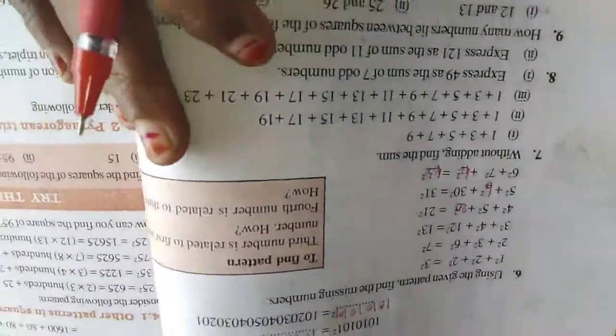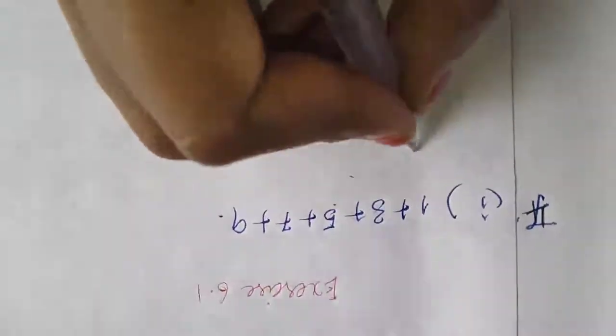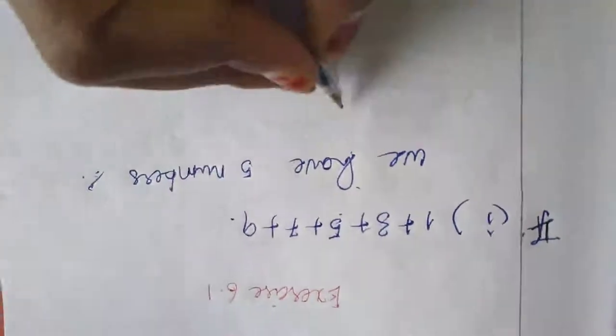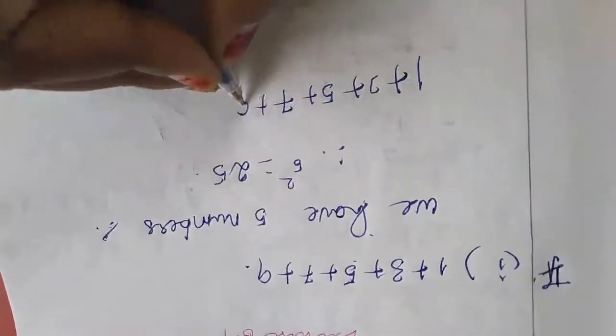2 squared. So here, 2 squared. We have 1, 2, 3, 4, 5 numbers. Therefore, 5 squared equals 25. So 1 plus 3 plus 5 plus 7 plus 9 equals 25. The number here is 5.